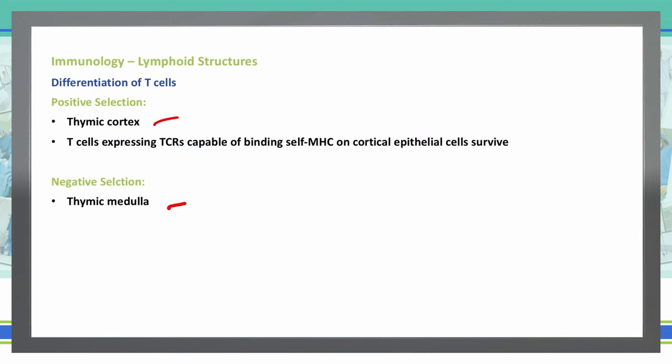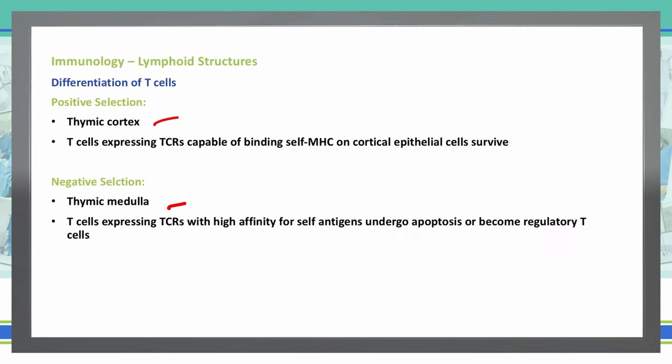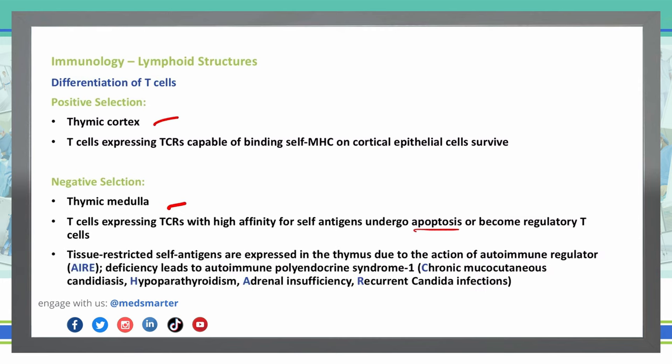In negative selection, T cells expressing TCRs that have a high affinity for self-antigens undergo apoptosis or become a regulatory T cell. Tissue-restricted self-antigens are expressed in the thymus due to the action of our autoimmune regulator, or AIRE — A-I-R-E.